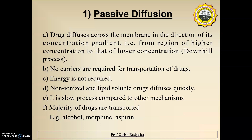Since the drug is moving from higher concentration to lower concentration, it is basically a downhill process. While diffusing from one area to another, no carriers are required for transportation, so energy is also not required. Non-ionized and lipid-soluble drugs can diffuse quite quickly. It is a slow process as compared to other mechanisms, and the majority of drugs are transported by passive diffusion.